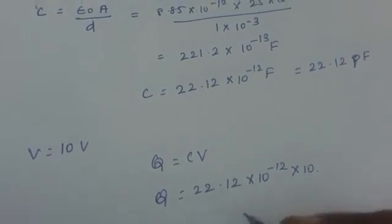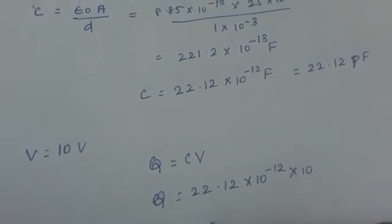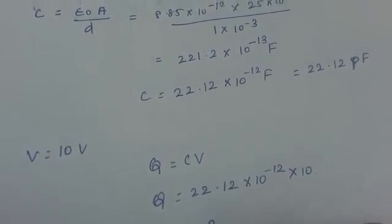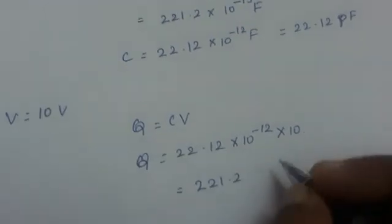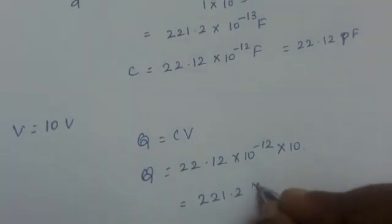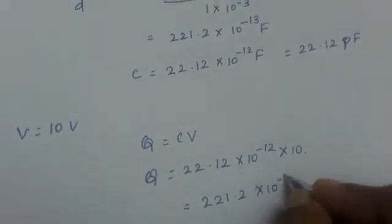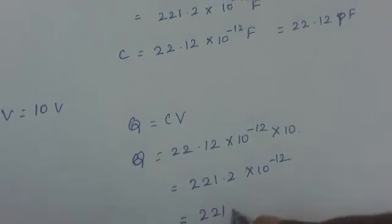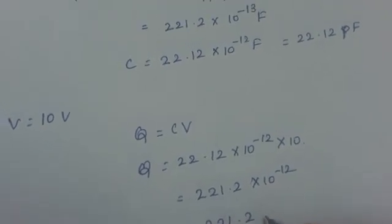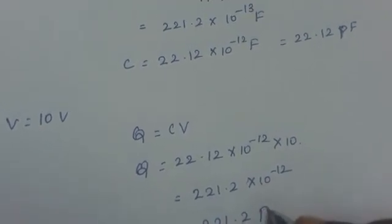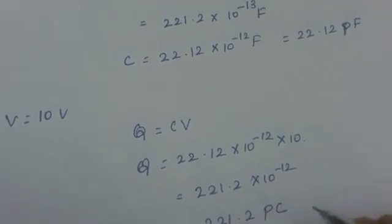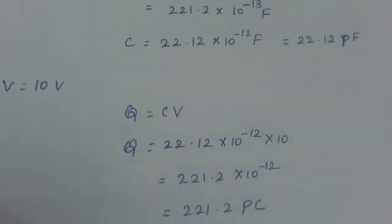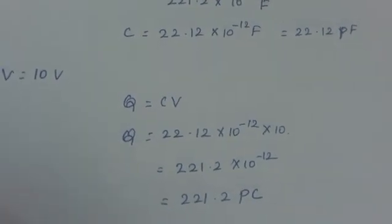So what will you get here? You will be getting 221.2 into 10 raised to minus 12, which can be written as 221.2 picocoulomb.